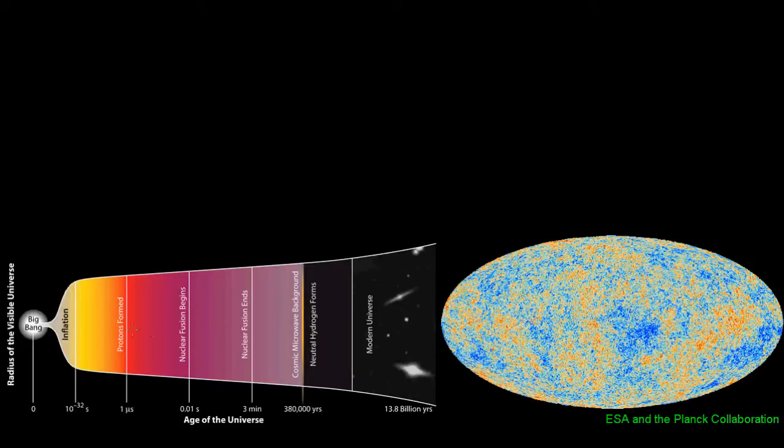But for the first 380,000 years after the Big Bang, the universe was so hot and dense that it was just filled with a hot plasma of free electrons and protons that light couldn't pass through.